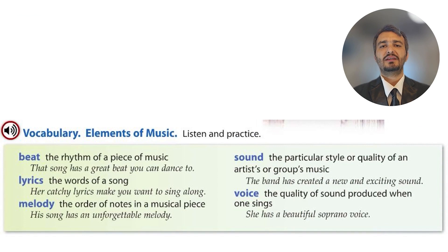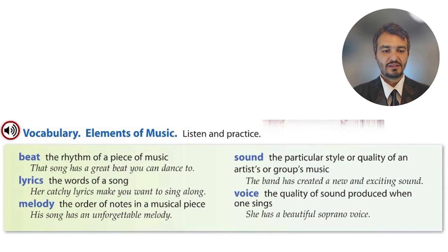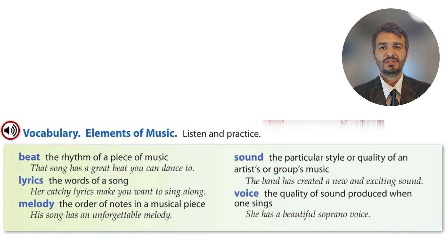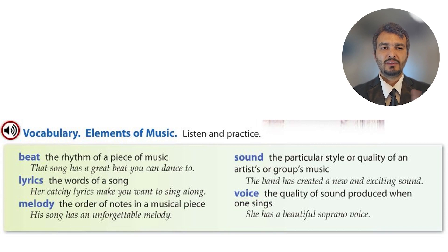Elements of music — 'element' here means parts or components. 'Beat' means rhythm — fast beat: one, two, three, or slow beat. On YouTube, if you want to find music, you can search 'upbeat music' for fast music or 'downbeat music' for slow music. 'Lyrics' means the sentences or poem of the music — the words of the song. 'Melody' is any kind of harmonic, good music.